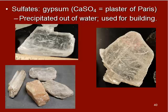The next group are sulfates. These have sulfur in their chemical formula — things like gypsum. Gypsum is used for plaster of Paris. It also precipitates out of water and is used for building materials as well, and you can see a couple of examples here.